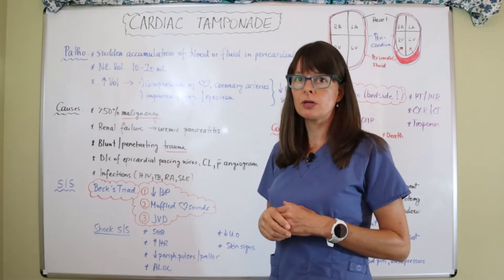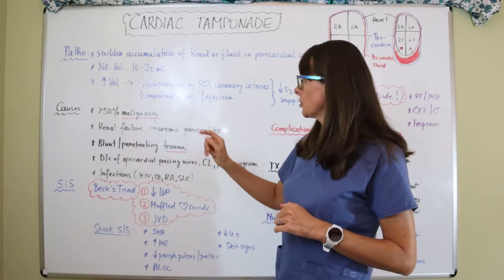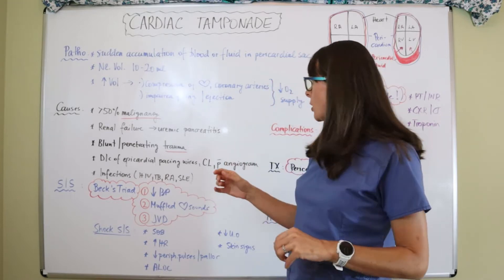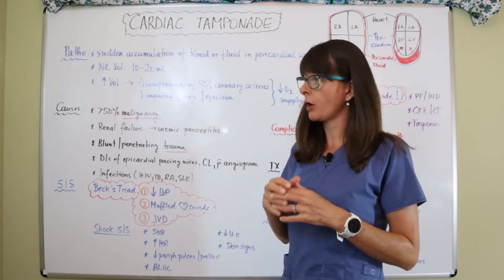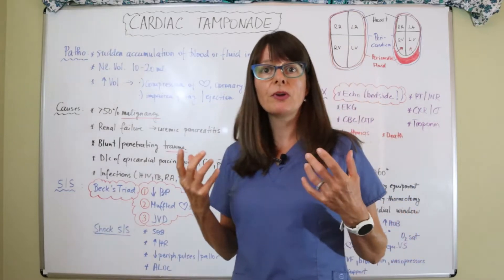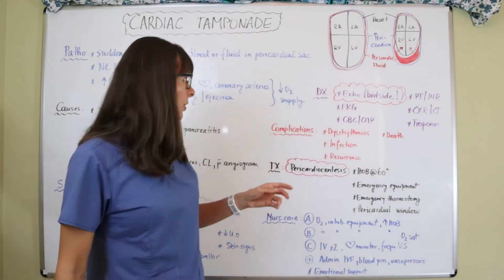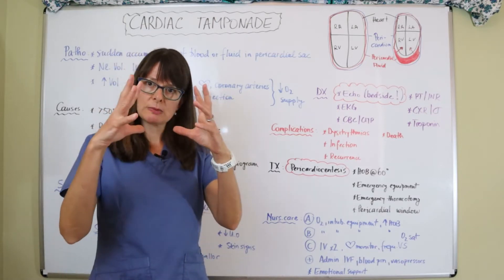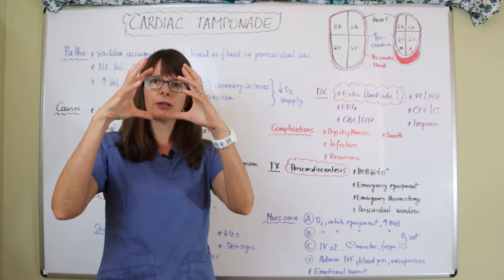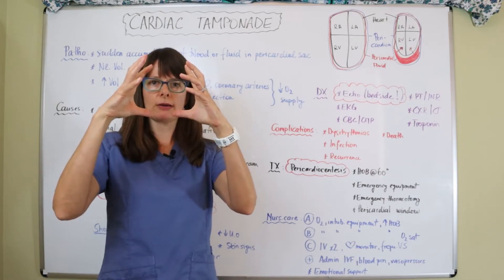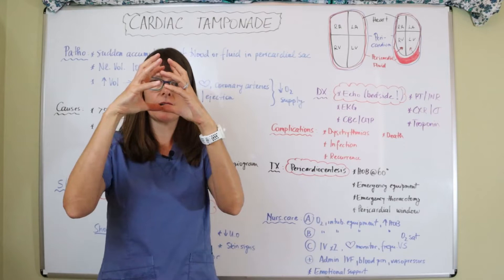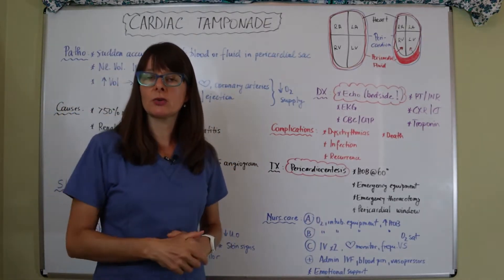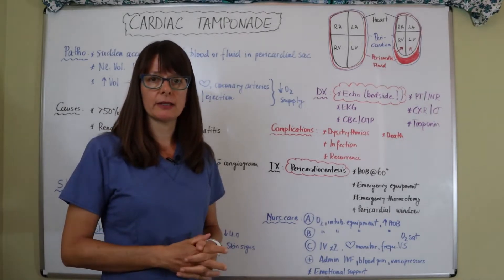This increase in volume causes compression of the heart because now it can't escape and it compresses on the heart itself and the coronary arteries, which then leads to impaired filling and ejection ability of the heart. Therefore we have decreased oxygen supply to the entire body. The pericardial layer surrounds the heart, and if there's fluid it compresses down on the heart which then can't expand and contract the way it usually does, which decreases the cardiac output.